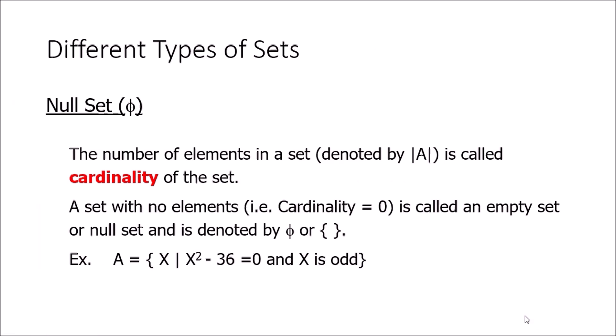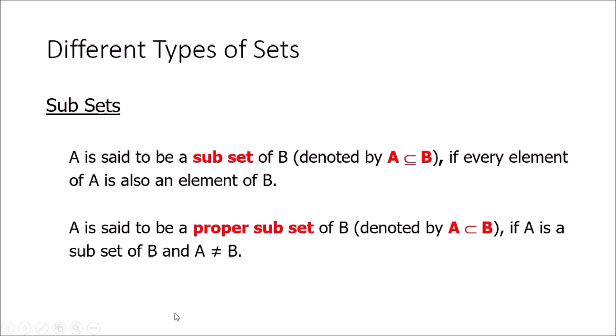Next, let's look at subsets. A is said to be a subset of B — denoted by the special subset symbol — if every element of A is also an element of B. There are two types: a normal subset where A and B can be equal to each other, and a proper subset where A is always not equal to B — meaning A is strictly contained within B.